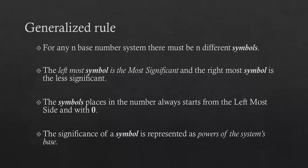Some generalized rules for number systems: For any n-base number system, there must be n different symbols. The leftmost symbol is the most significant, and the rightmost is the least significant. Symbol places always start from the rightmost side with zero, and the significance of a number is represented as power of its system's base.